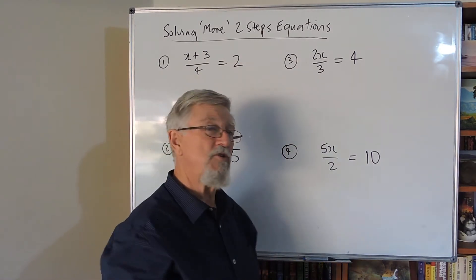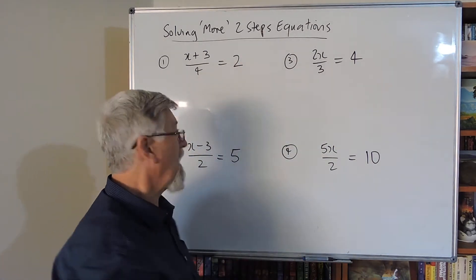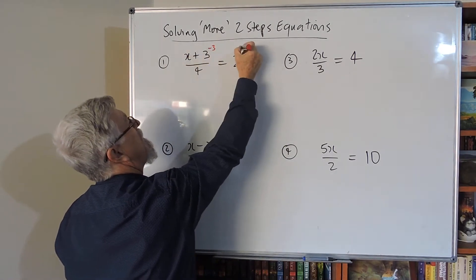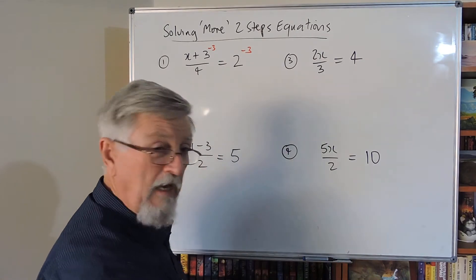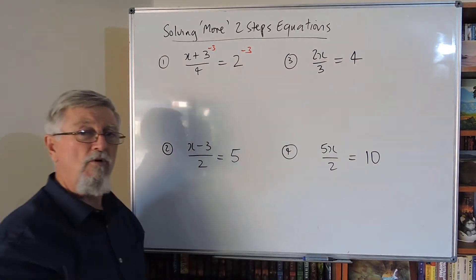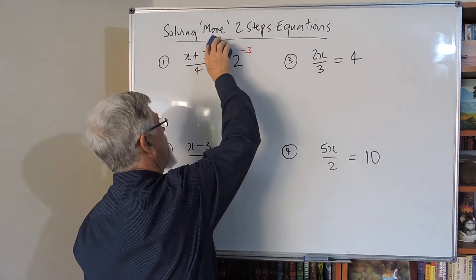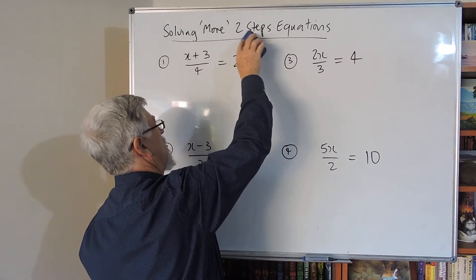I see student after student say they're okay with equations and they go 'the opposite of plus three is minus three and I do it to both sides,' and unfortunately get the question wrong. I could go slowly through and show you why it's wrong, but let's just talk about the technique.